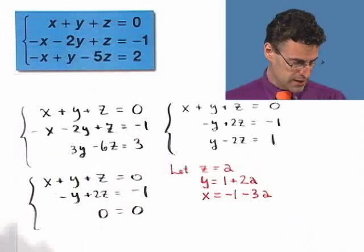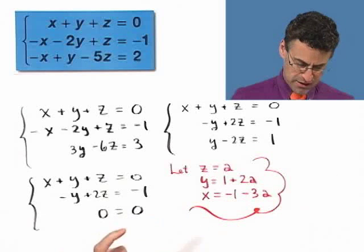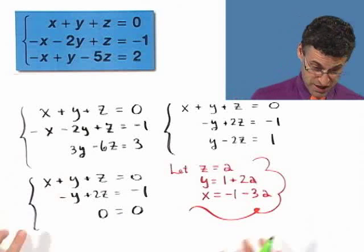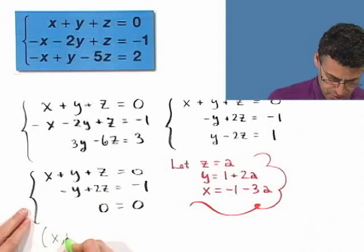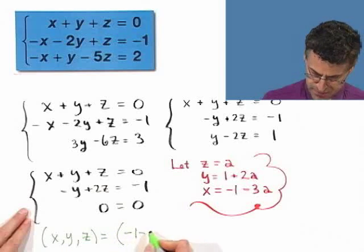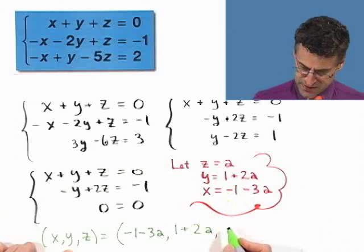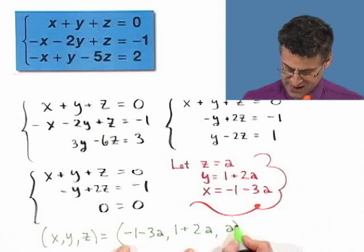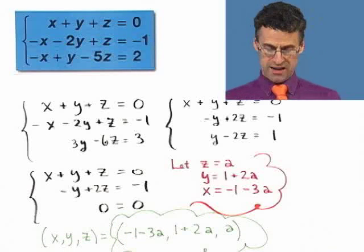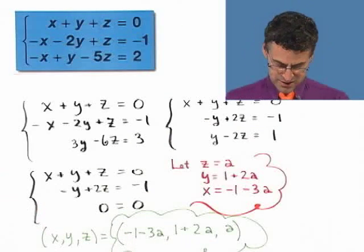And so what that shows me is that we now see there are infinitely many solutions. And I can write the solutions as an ordered triple if I want, which I always like to do. So x, y, and z, remember the order. The x equals negative 1 minus 3a. The y is 1 plus 2a. And the z is just a. And so here's an example where we have infinitely many solutions, because this is true no matter what a is. So if you pick different values of a, you'll actually find different solutions.